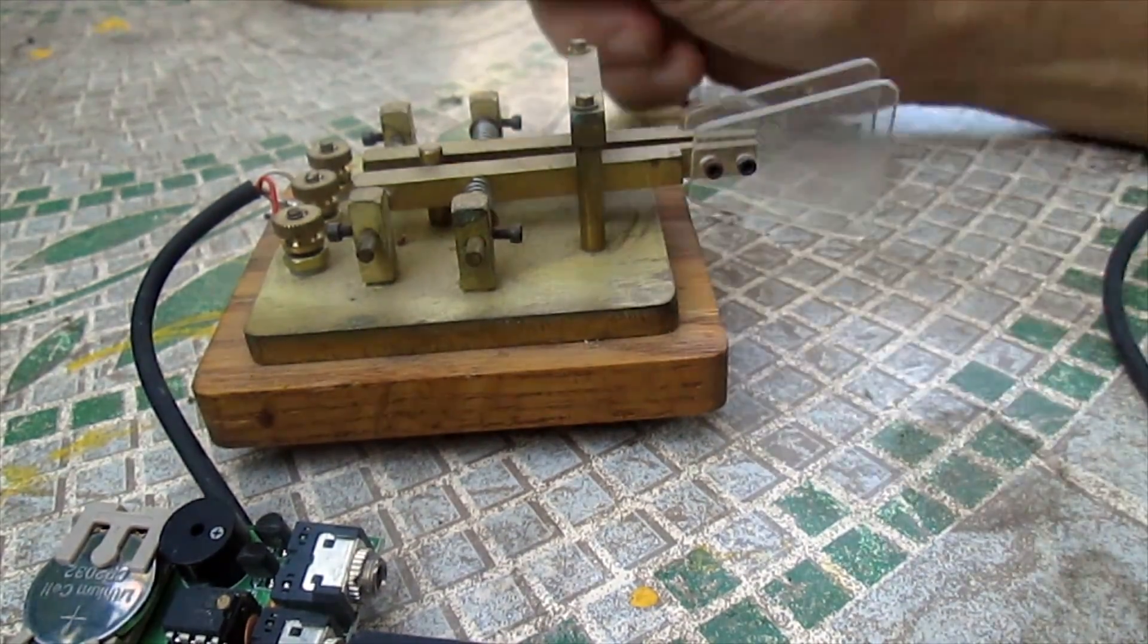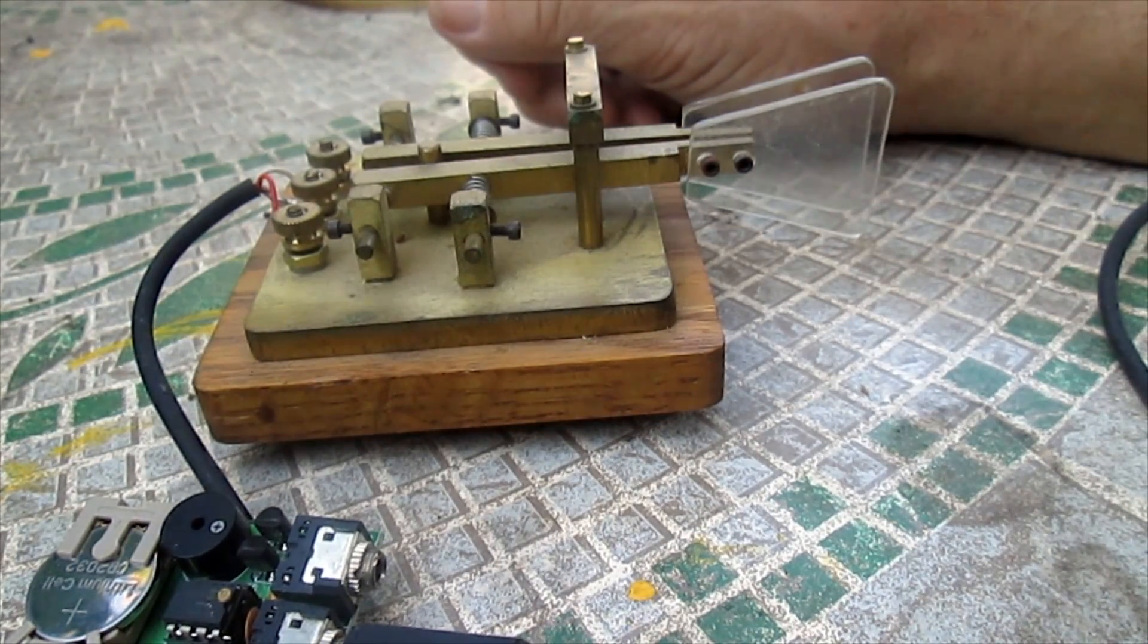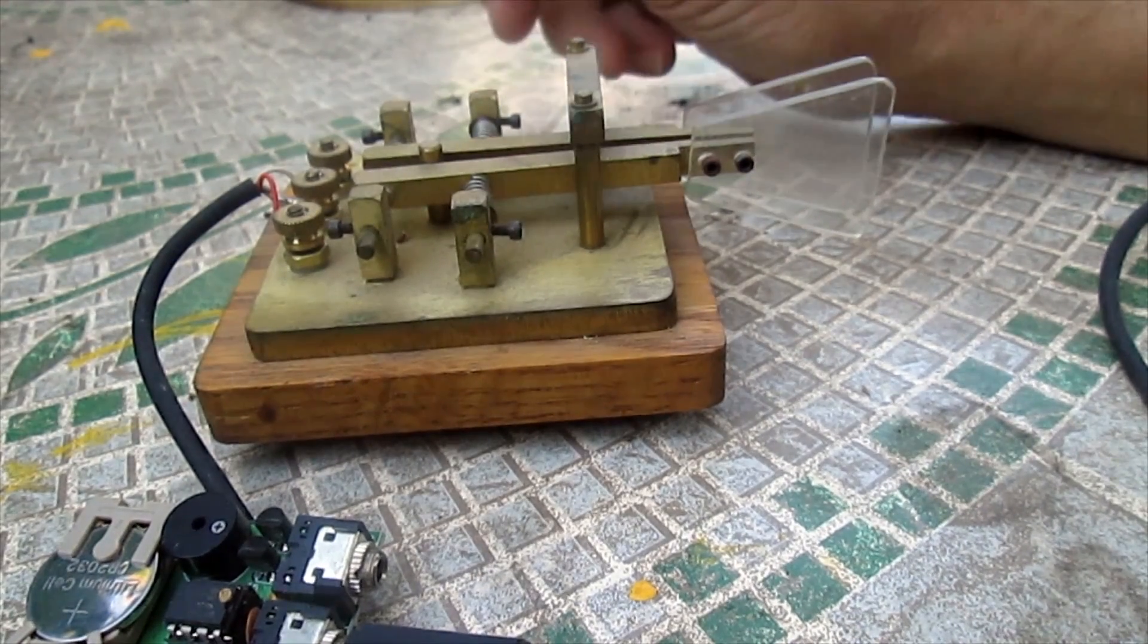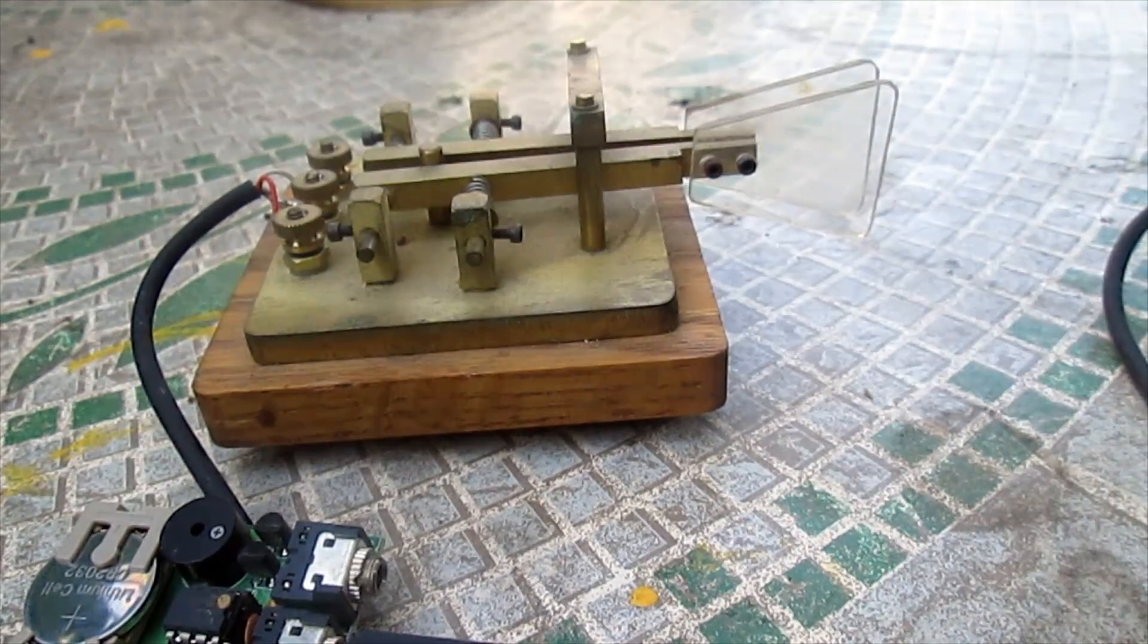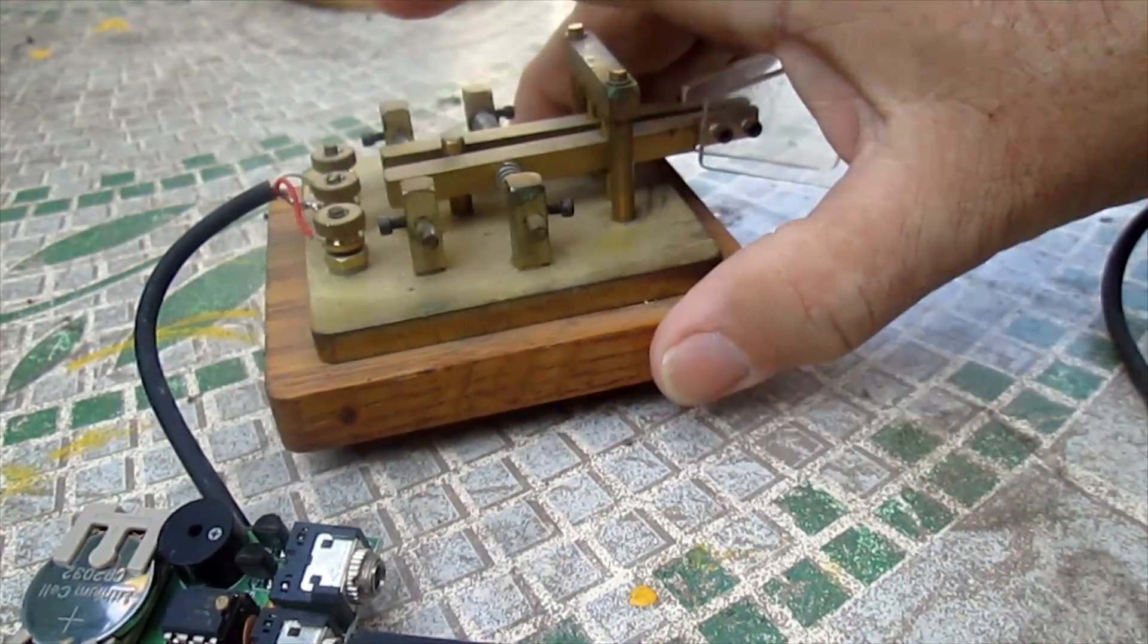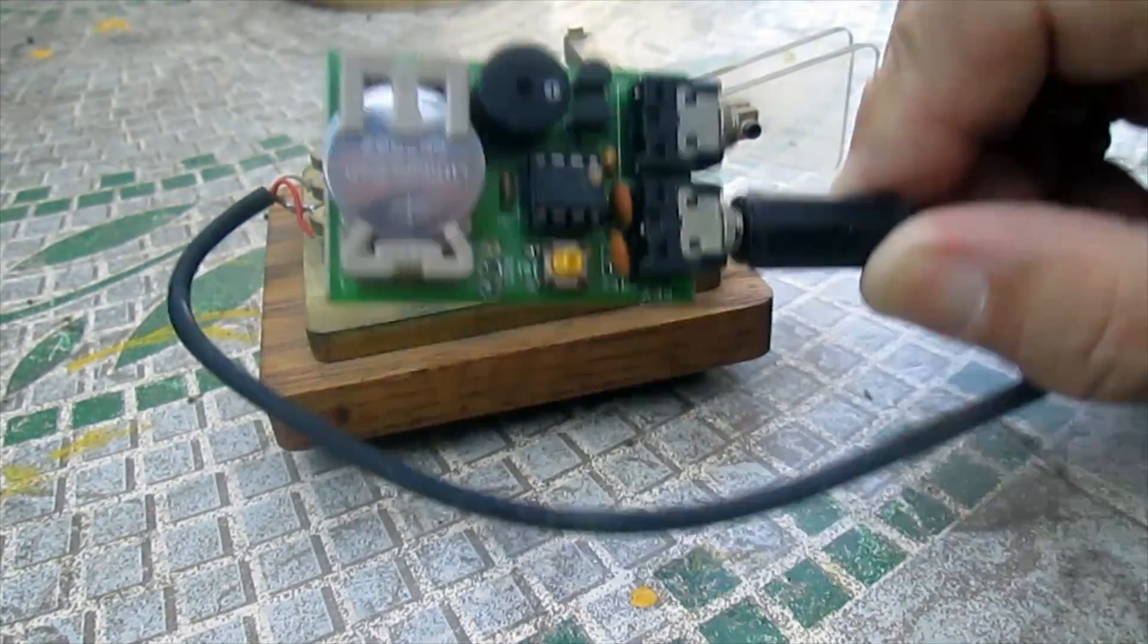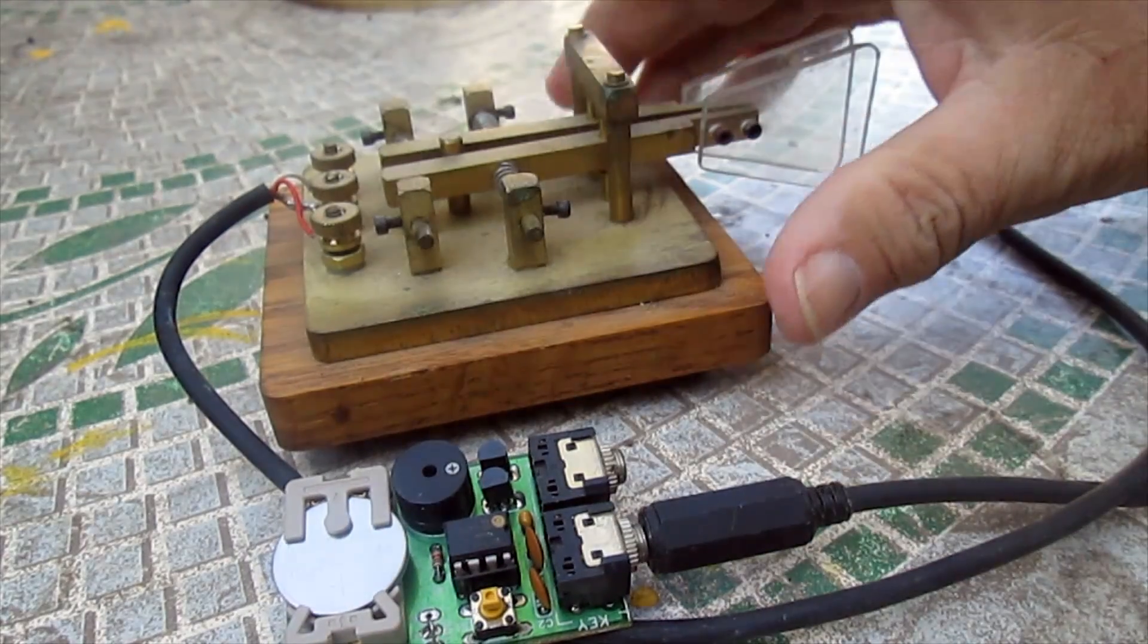The straight key is totally dependent on how the operator uses it, how well it comes out. This one would be too, except that we have some improvements here. We have a keying board, and what this does is we have one side of the paddle that is for the dits and one side of the paddle that's for the dashes.